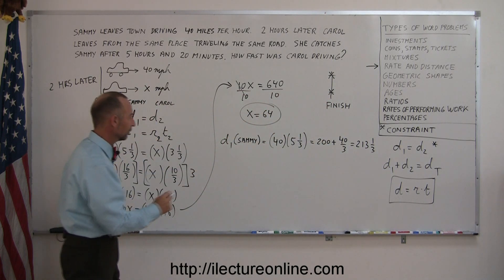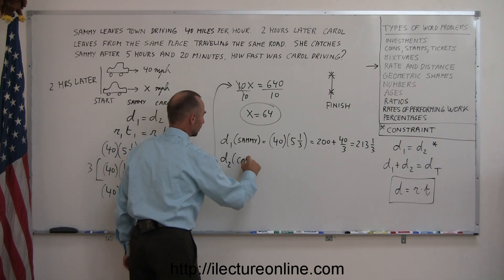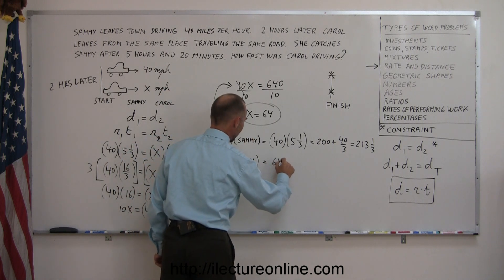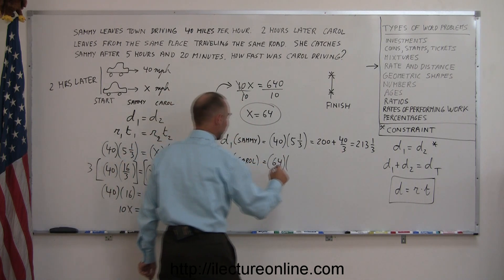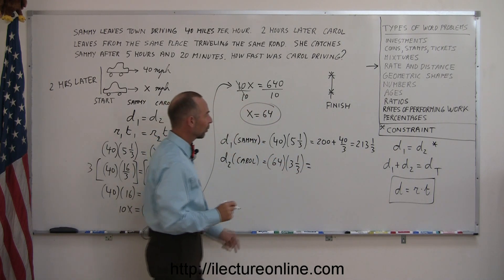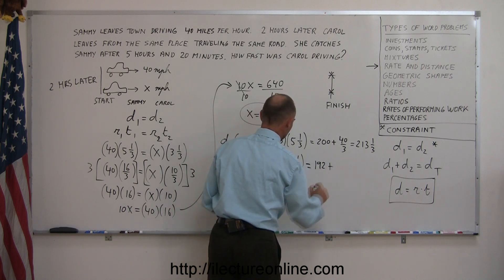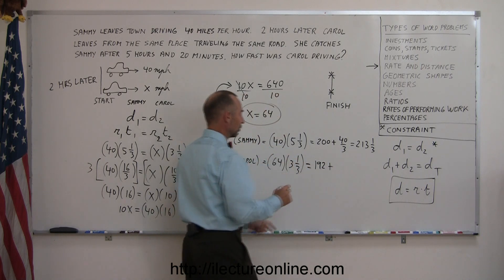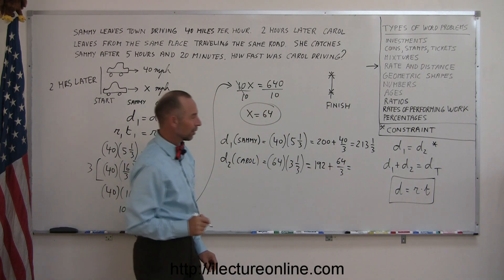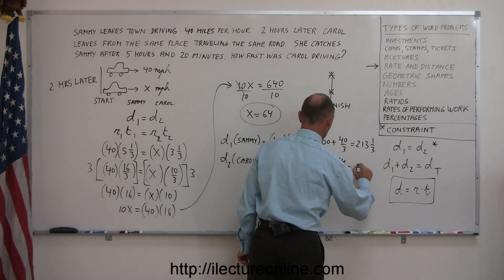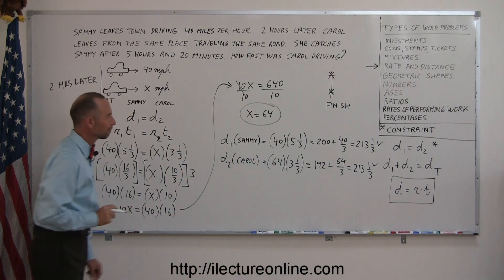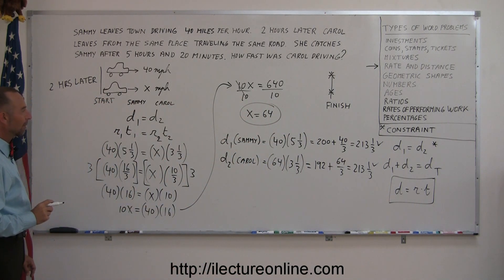We'll do the same for Carol. Distance 2 for Carol. So she travels faster at 64 miles per hour, and she travels for 3 hours and a third. So 3 and a third. So 3 times 64, that's 192. And 64 times a third, that's 64 divided by 3. And 3 goes into 64, 21 and a third times. So I add that there, I get 213 and a third. They're both the same. That means I did the problem correctly. So that's how you solve a problem using distance, rate, and time.